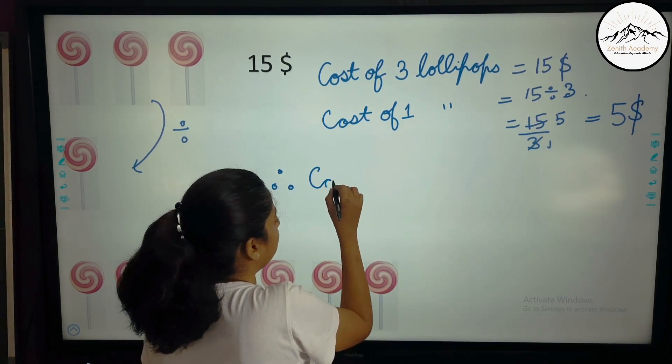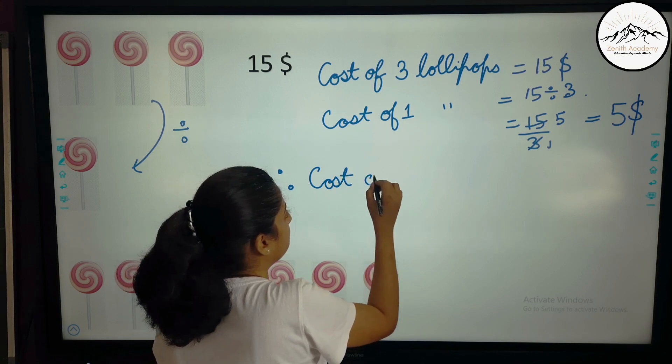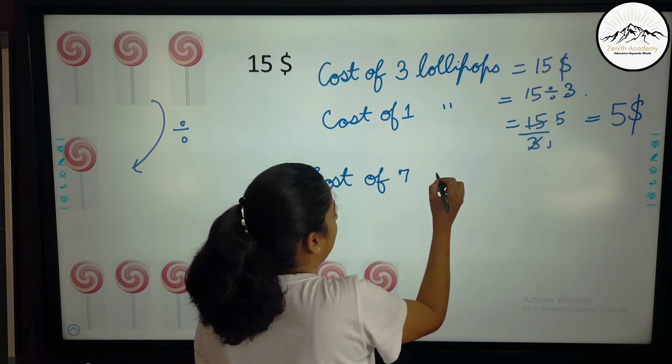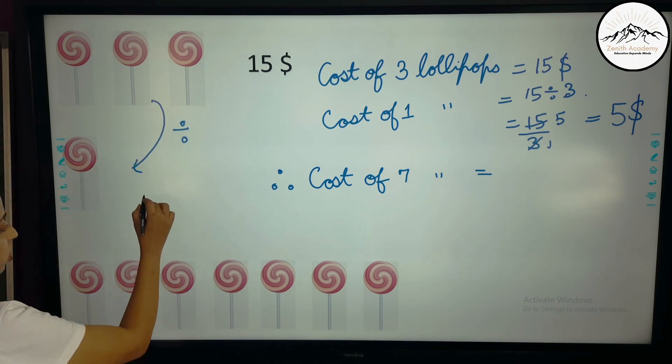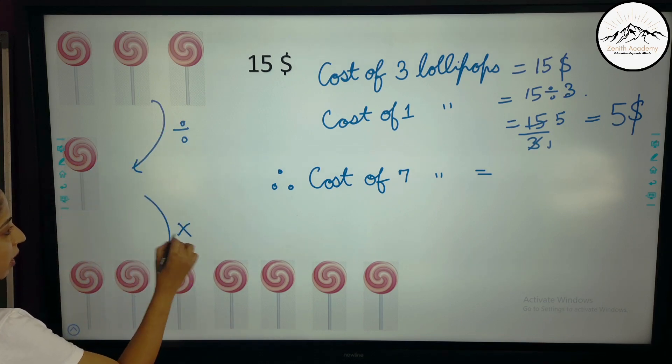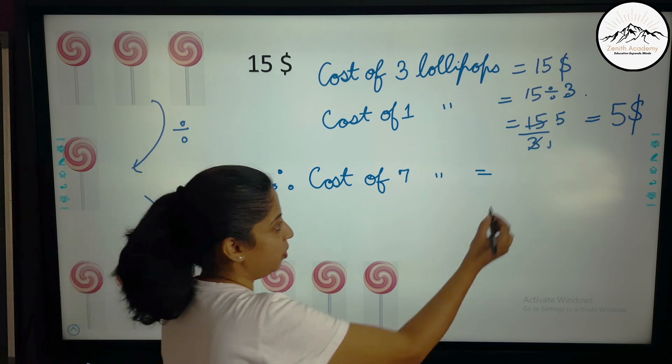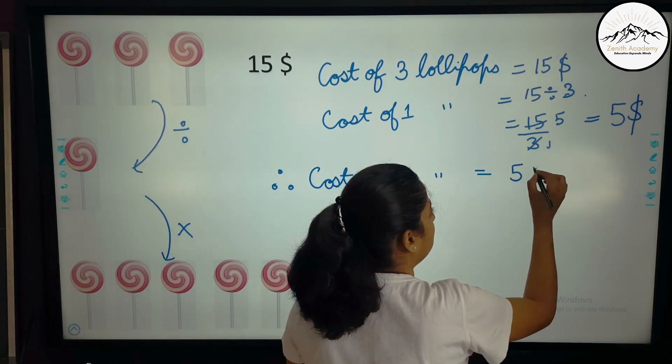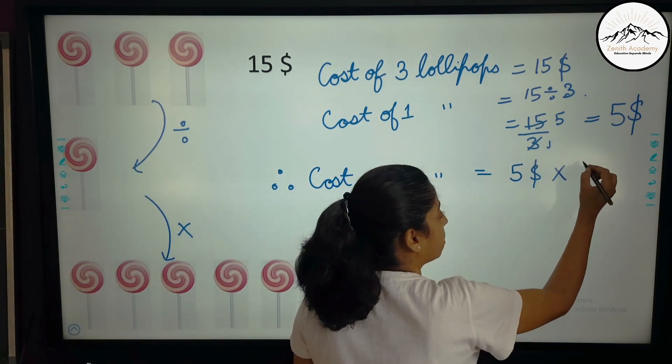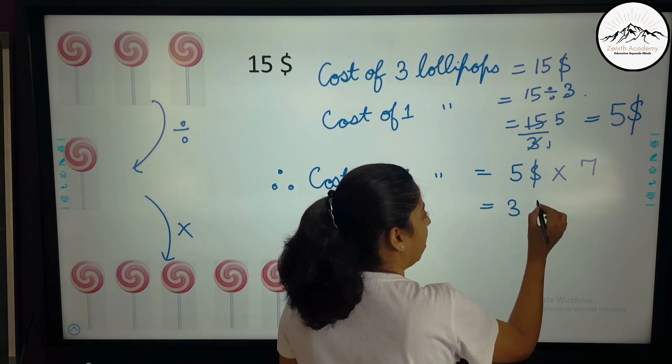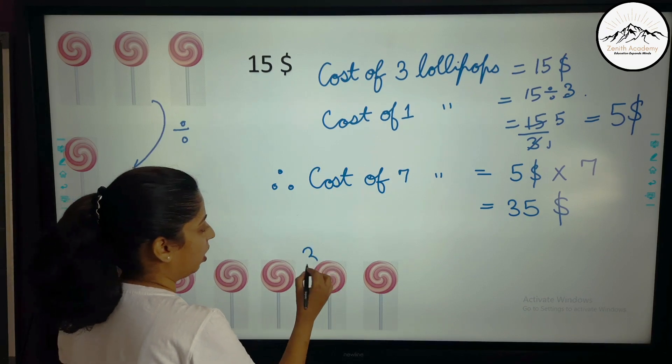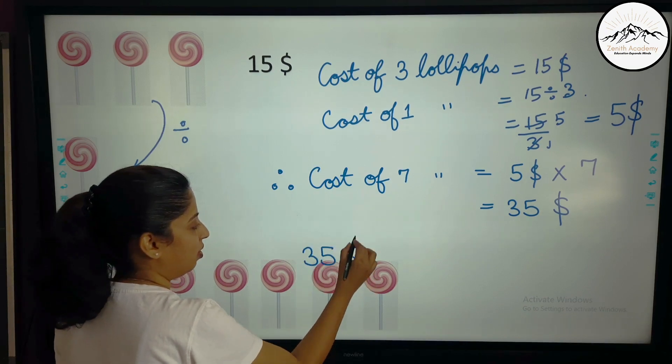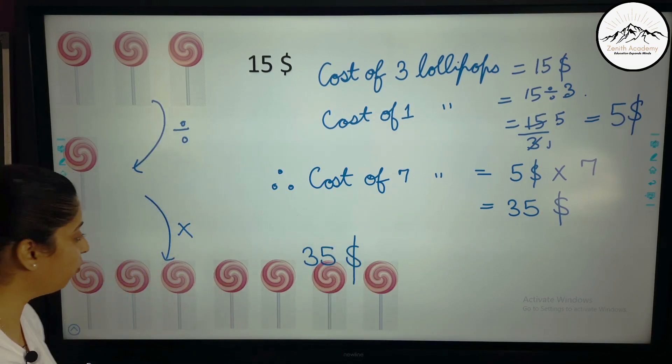So therefore, now I can easily find the cost of 7. How I will find the cost of 7? One cost I have got. So now I will multiply. So cost of 7 will be cost of 1, which is $5, into how many lollipops I want? 7. So this becomes $35. So I pay at the counter $35.